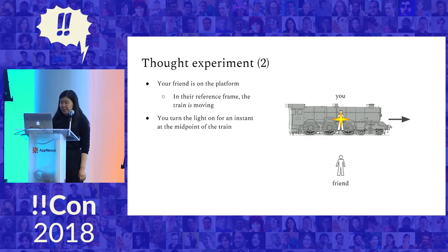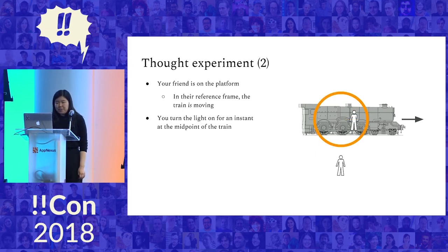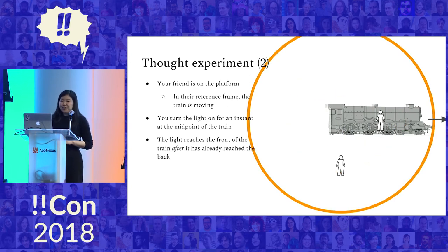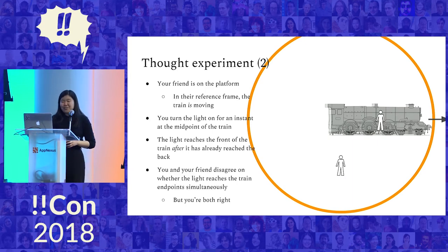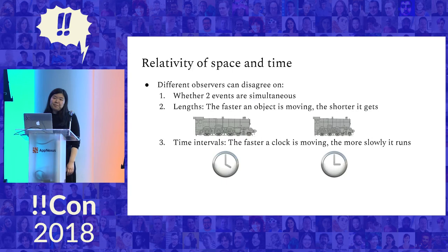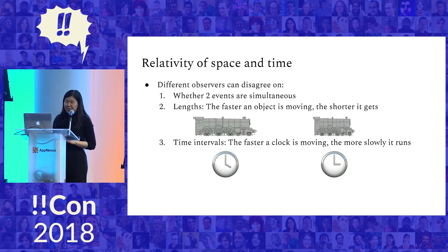The second postulate says the motion of the train — which is the light source — doesn't actually matter. From your friend's reference frame, the light still spreads out in concentric circles. So the light now reaches the front of the train after it already reached the back. This means you and your friend actually disagree on whether the light reaches the train endpoints simultaneously — you think it does, your friend says the light reaches the front after it's already reached the back. But you're both right; neither of you is more right than the other.